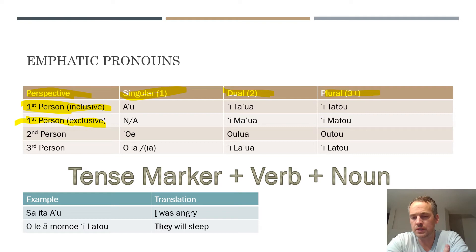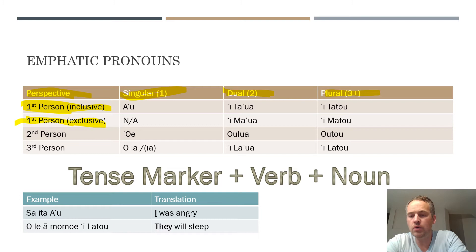For first person exclusive: it's still au for singular, so there's no difference between inclusive and exclusive for a singular first person pronoun. But for dual and plural, instead of saying itā and itātou, we say imā and imātou. All we're doing is switching out the T for an M.